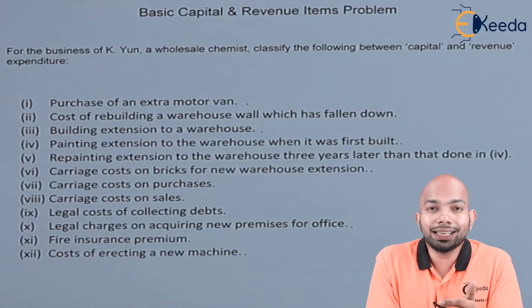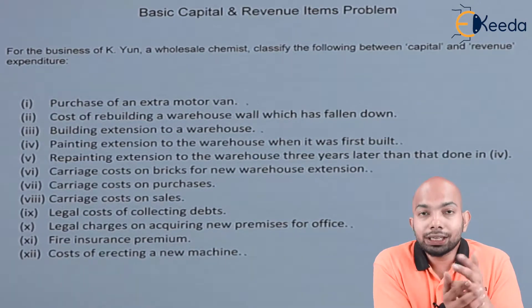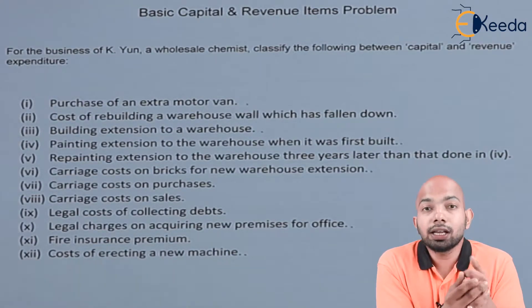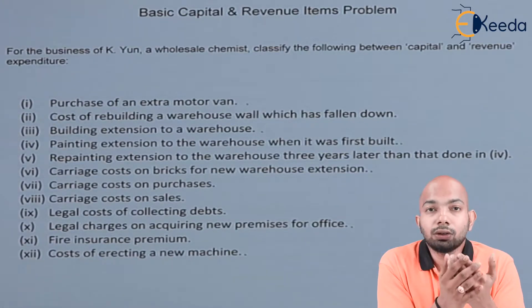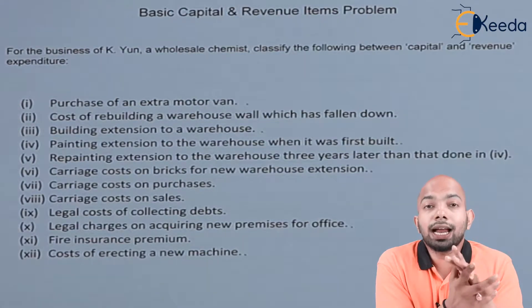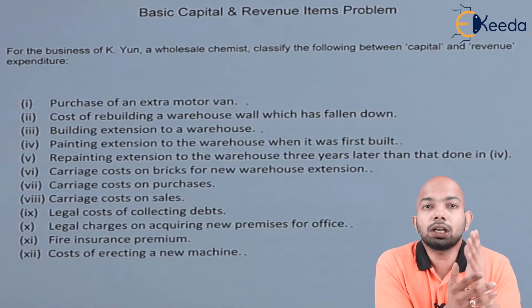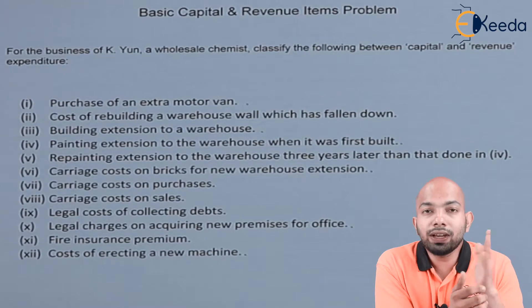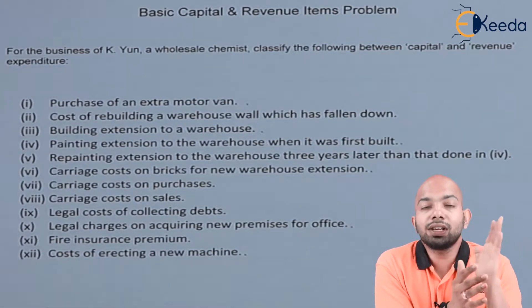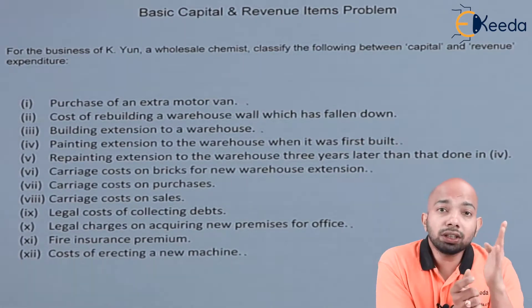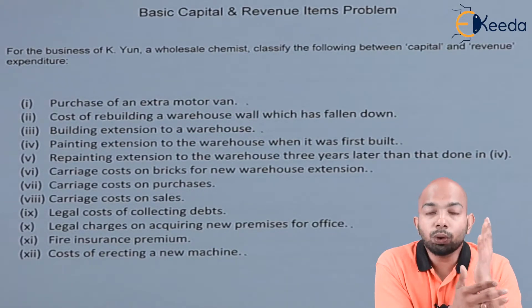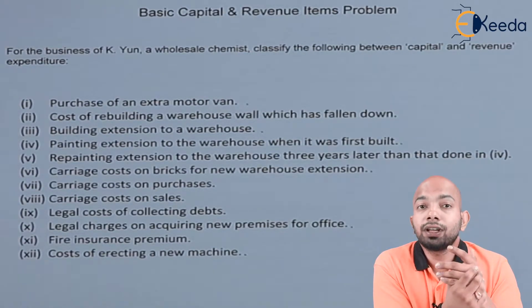Revenue items are recurring in nature. Capital items occur once in nature. Capital enhances or reduces the cost of any item — it also enhances the capacity or profit-earning ratio. Revenue, on the other hand, is something required for the day-to-day process, meaning the working should go on. We have a certain illustration that will help you understand what kinds of items are part of capital and what kinds are part of revenue.